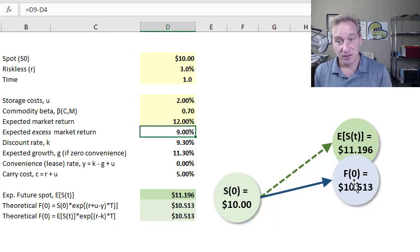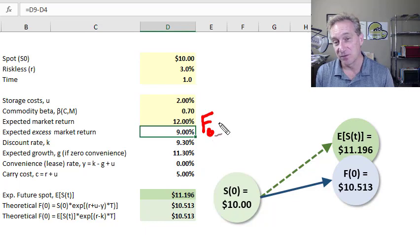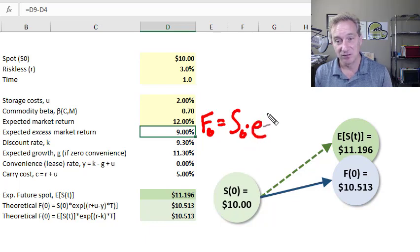Now, the theoretical futures price is given for us by the cost of carry model. And so in this situation, the cost of carry model briefly tells us that the theoretical futures price ought to be equal to the spot price, then grown at, in this case, continuously, the cost of carry.